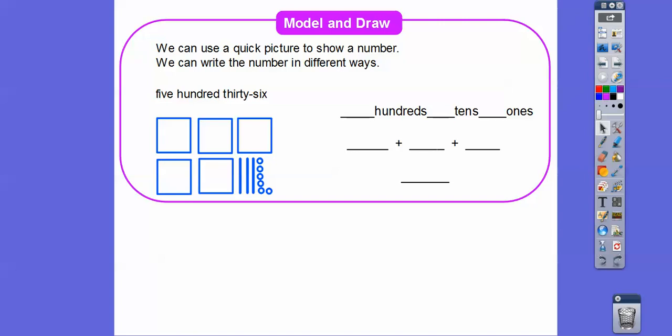So there's 5 hundreds. There's 3 tens and 6 ones. So 5 hundreds is the same as 500. 3 tens is the same as 30 and then 6 ones is just 6. So 500 plus 30 plus 6 is 536.